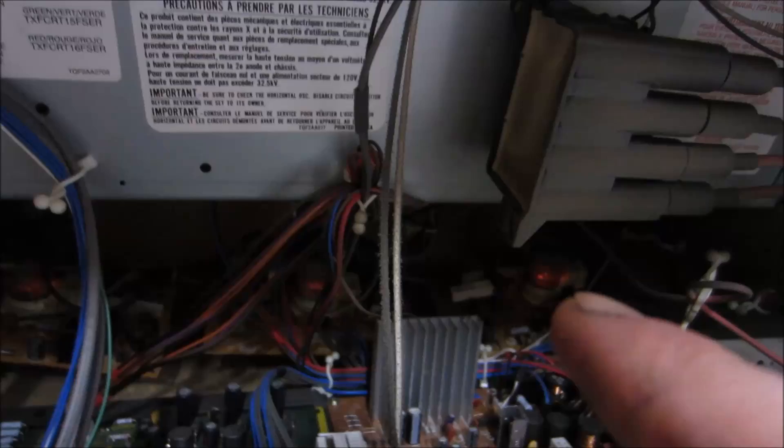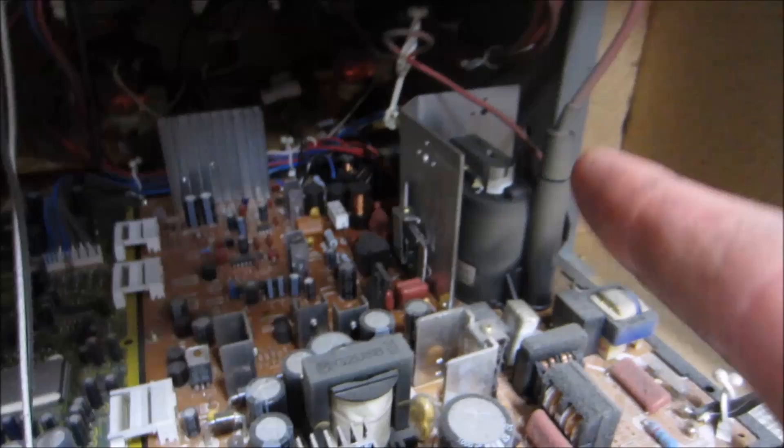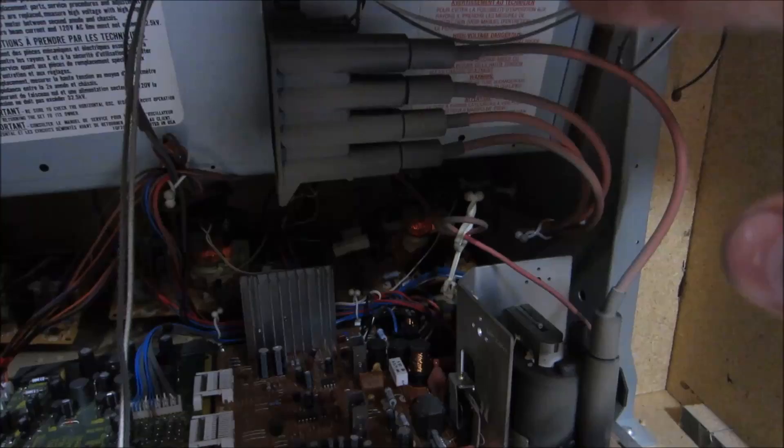Those are all CRT tubes. Those are what is being used for the projection itself. This is the thing creating those high voltage. The high voltage is used by the electron guns. So you can see right there there's the input and you have these three lines for RGB.